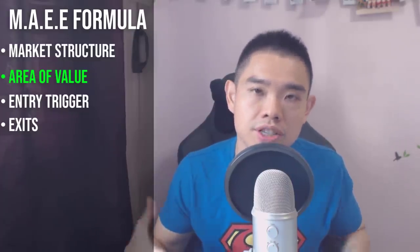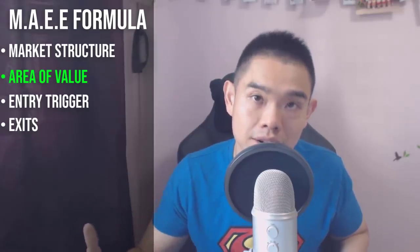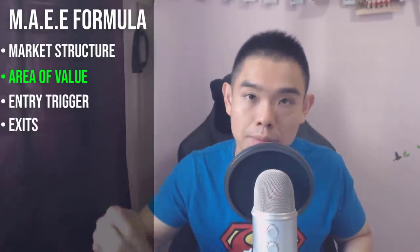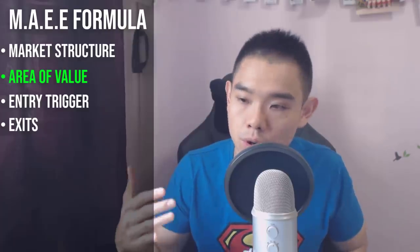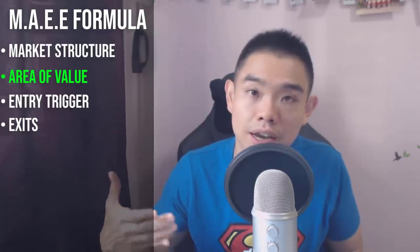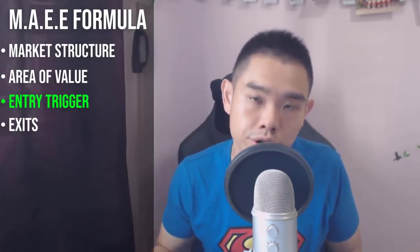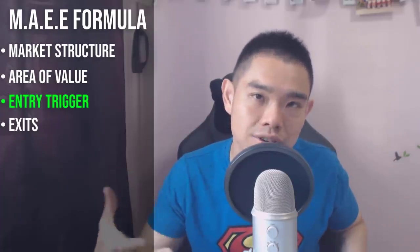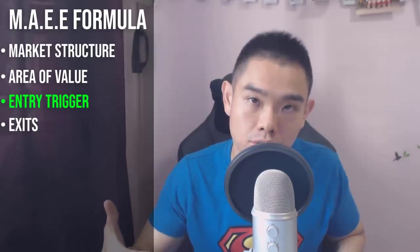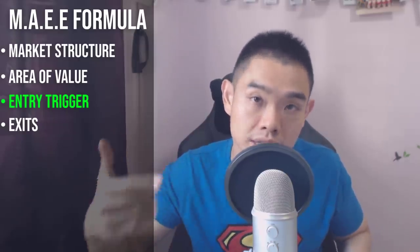Number two — is the price near an area of value? Just because the market is in an uptrend doesn't mean you want to buy immediately. You want to buy from an area of value — this could be from an area of support or from the upward trend line where the price respects the trend line. Number three — entry trigger. Do you have a valid entry trigger? This could be a hammer showing rejection of lower prices, or a bullish engulfing pattern telling you the buyers overwhelmed the sellers and closed near the highs.